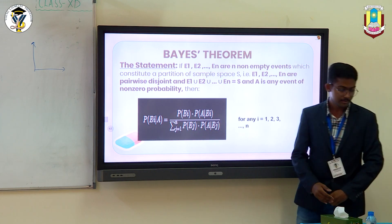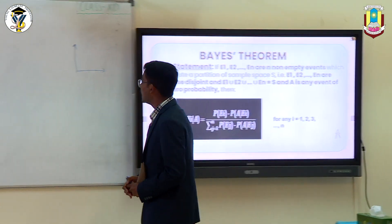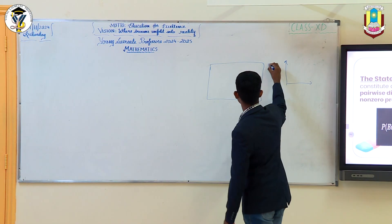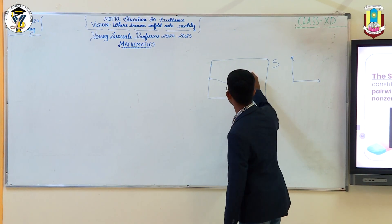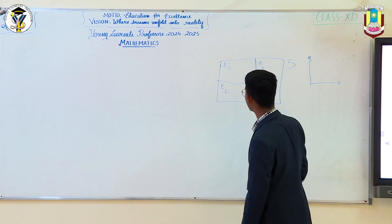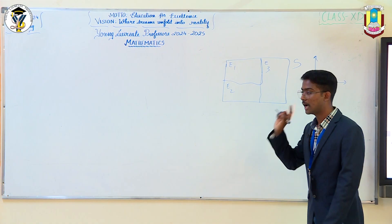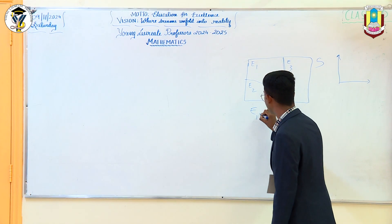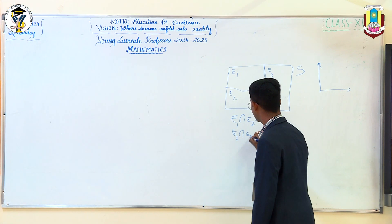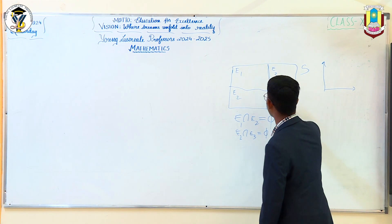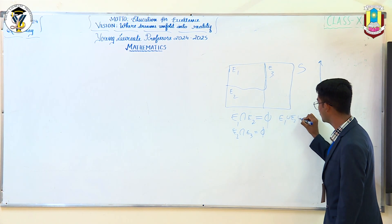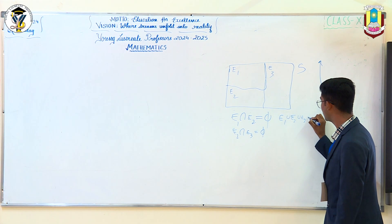Let us look at what the statement for Bayes' Theorem tells you. According to the mathematical statement for Bayes' Theorem, if you have any sample space S which is divided into multiple events — like I am dividing my sample space here into three events E1, E2 and E3 — in such a way that these three events are mutually exclusive. That is, each pair of them, their intersection would be phi. If their intersection is phi and they are exhaustive as well, that is, the union of these three events would give you back the sample space.